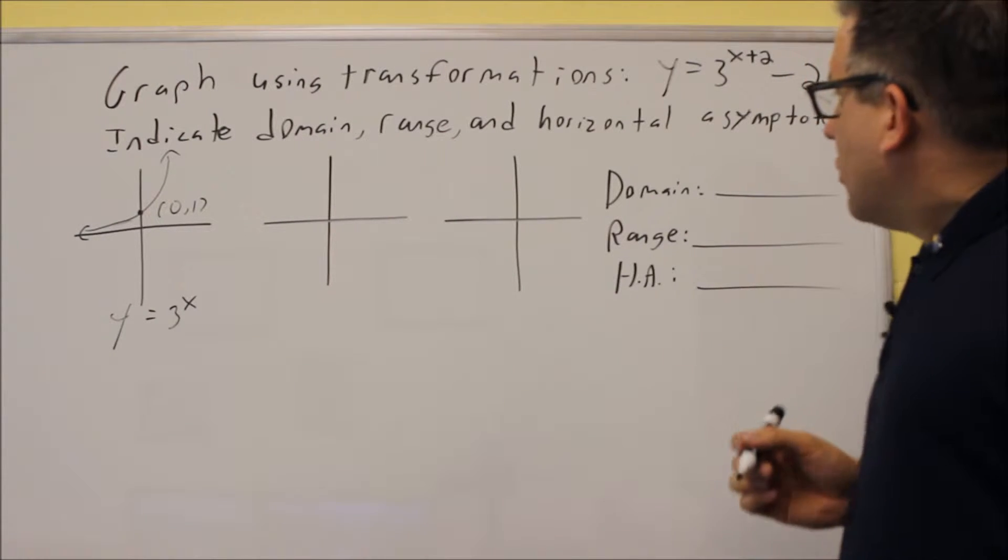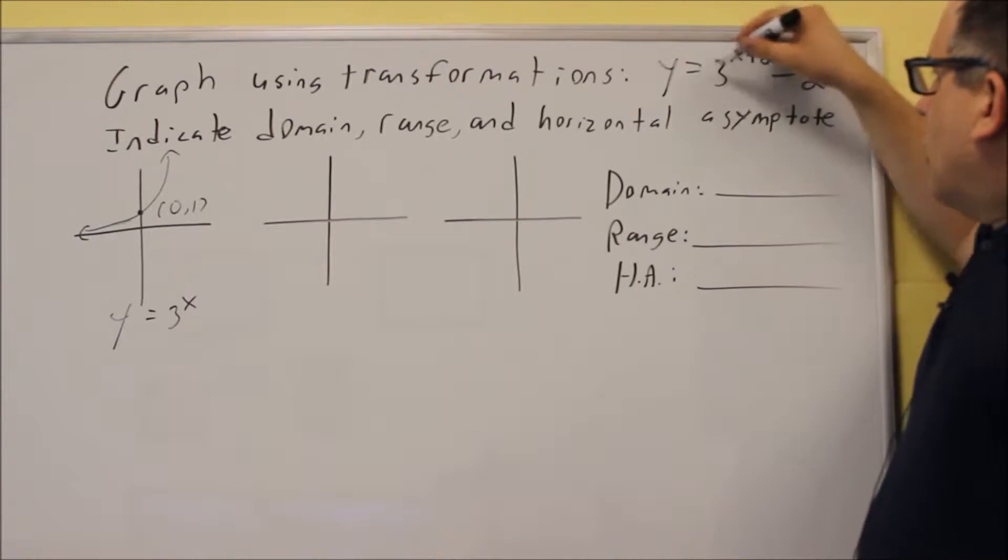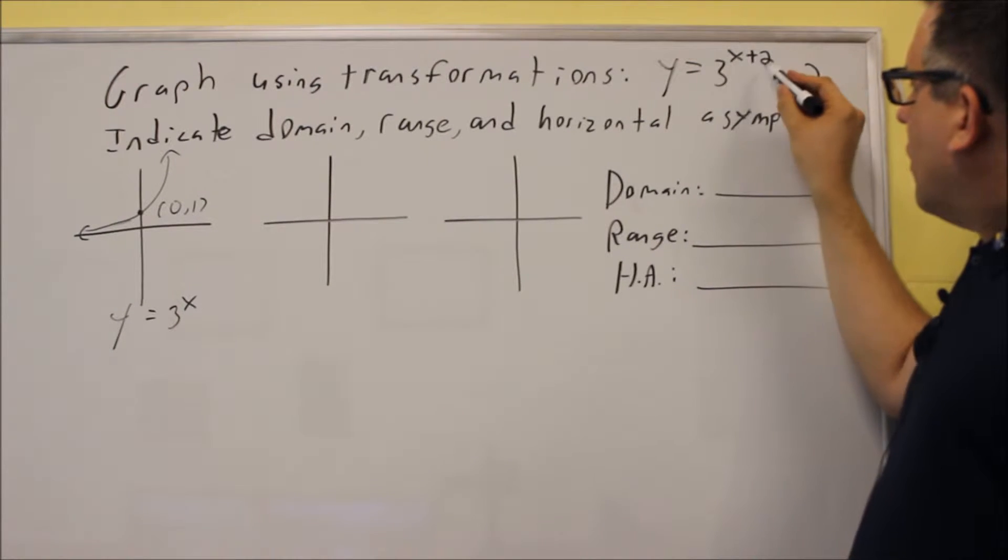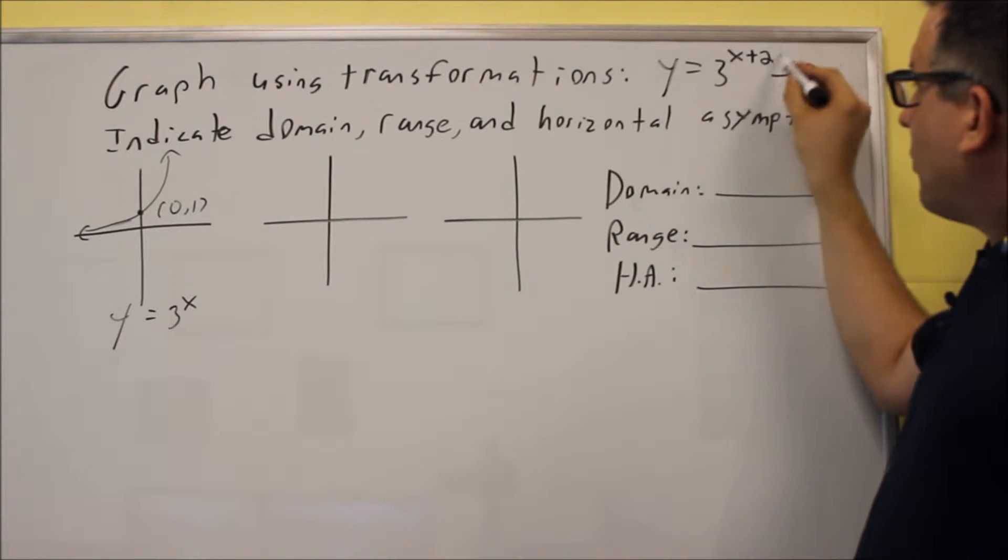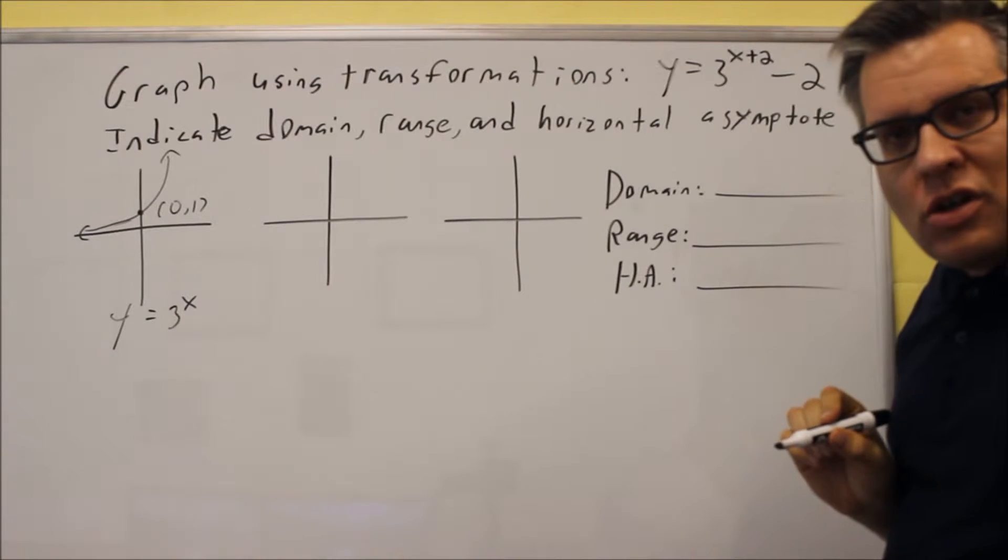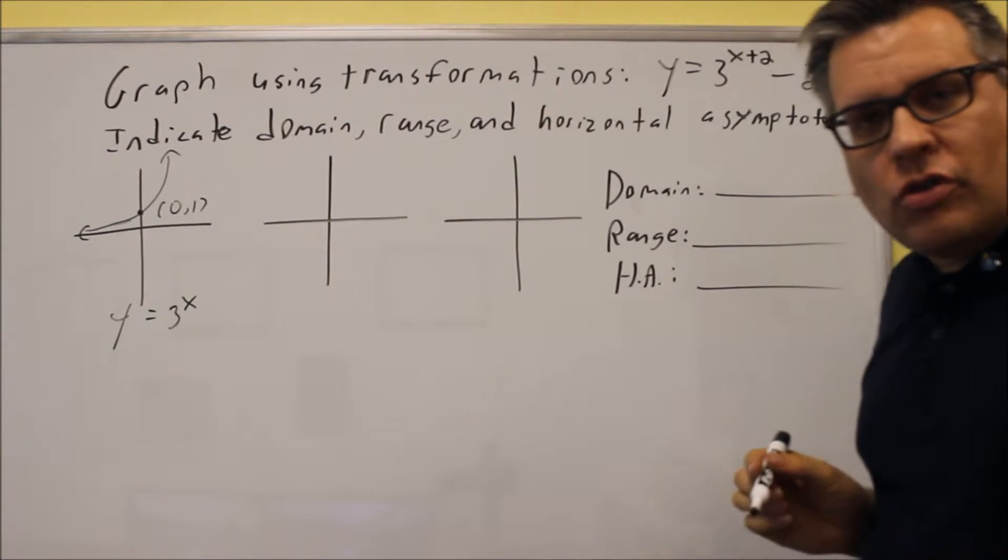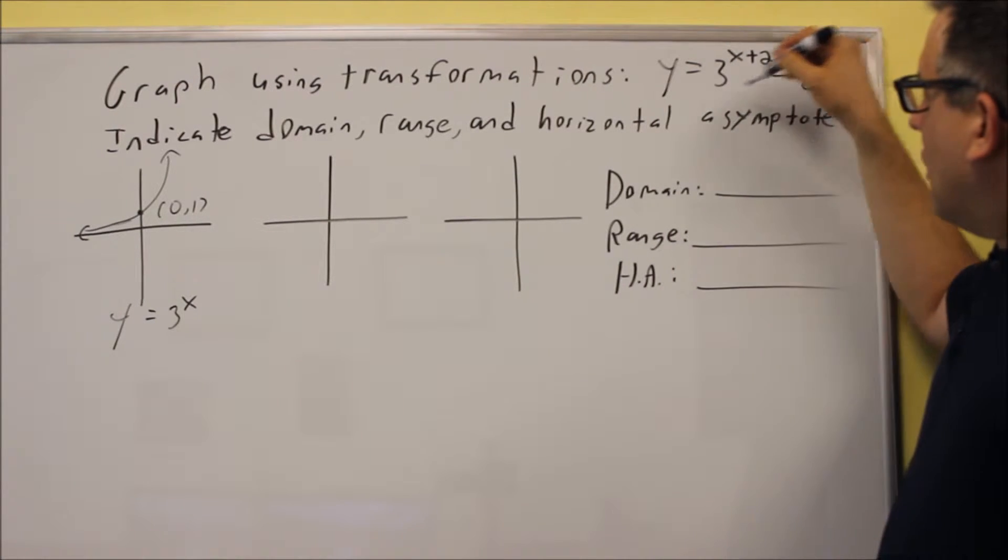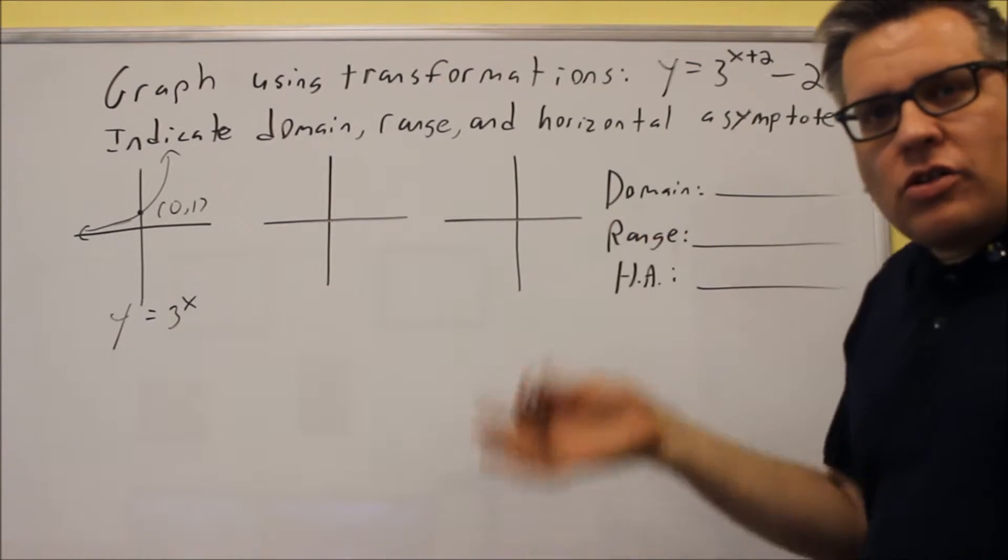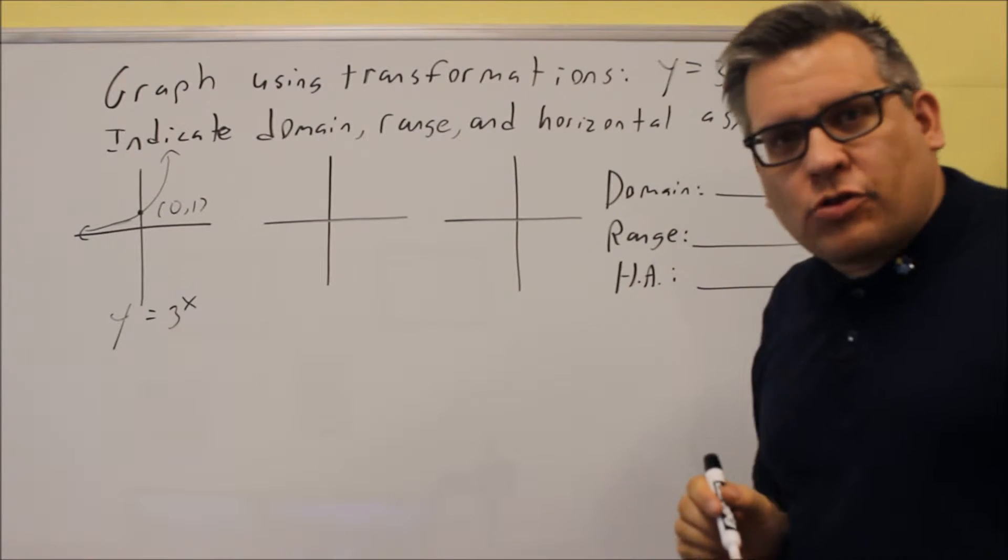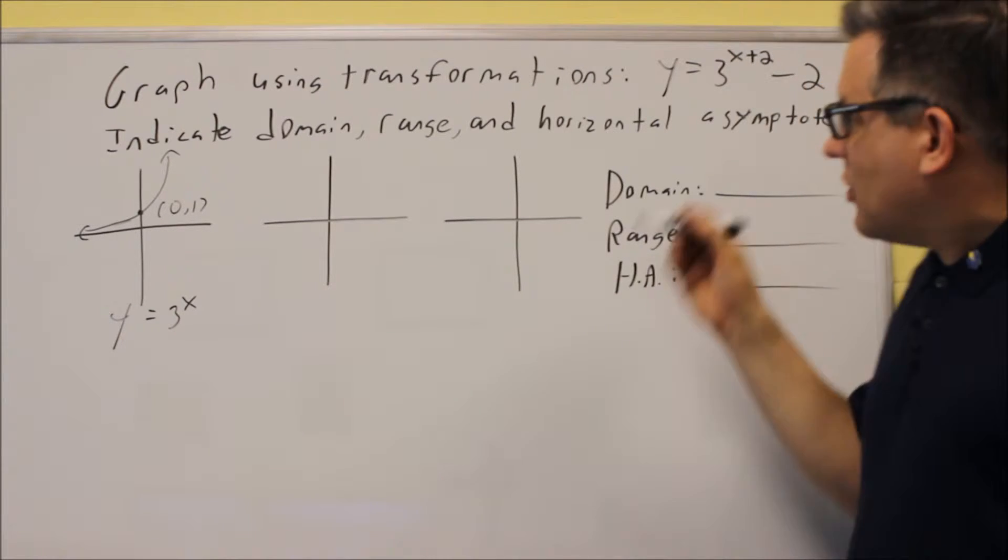Now, next thing we're going to do is we're going to work with the exponent here. Because you have a plus inside the exponent position, what that does is it moves the graph two places over to the left. So when you do these, you're doing these in order of operations, that's how you do the ordering with the transformations.